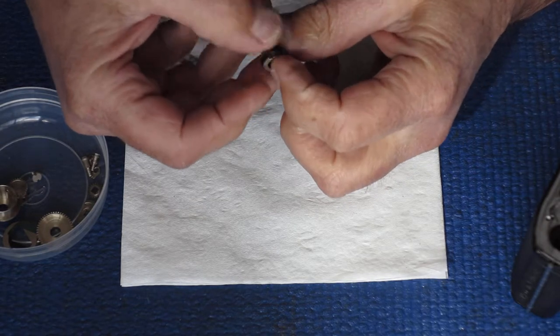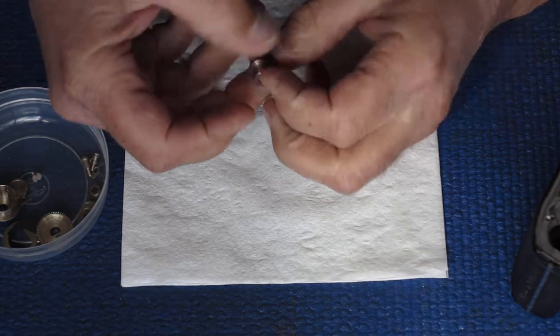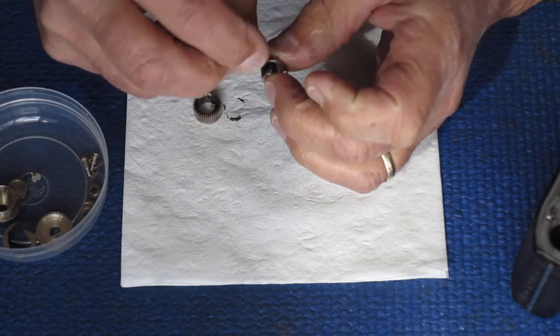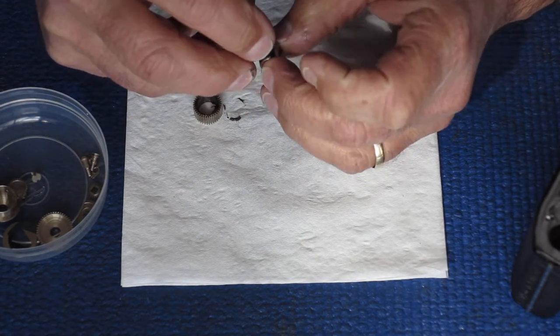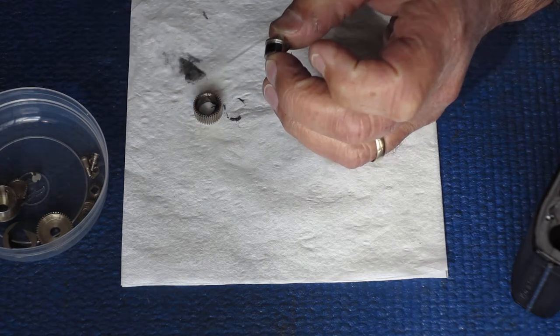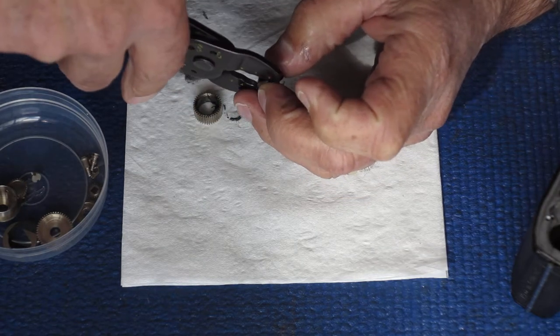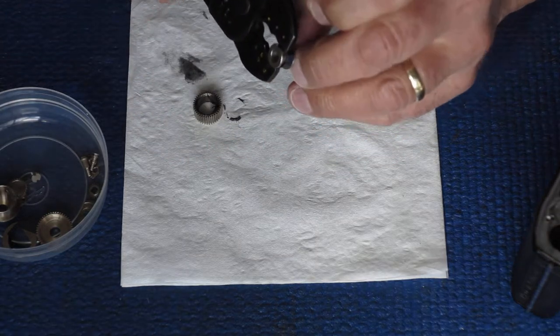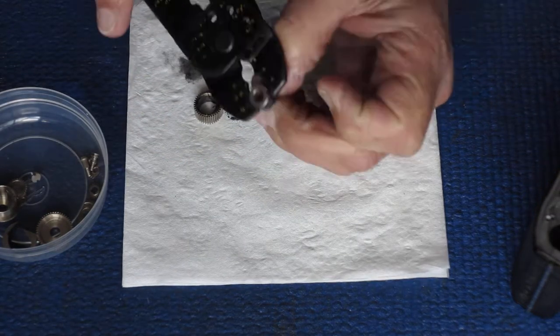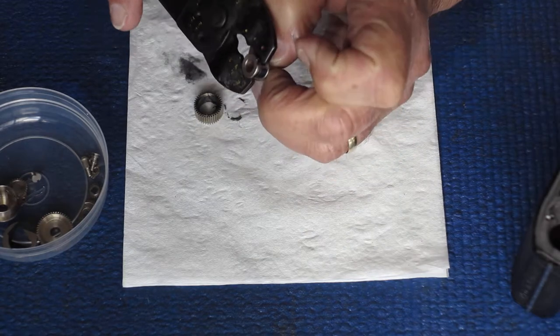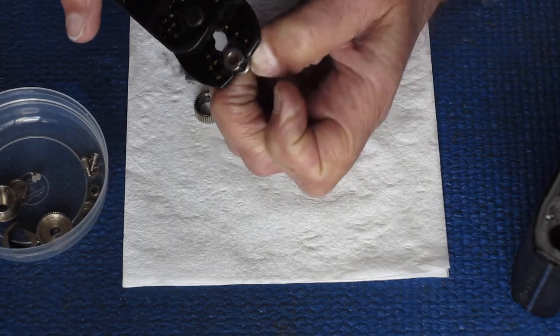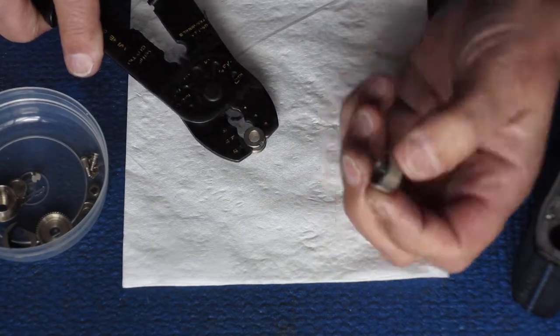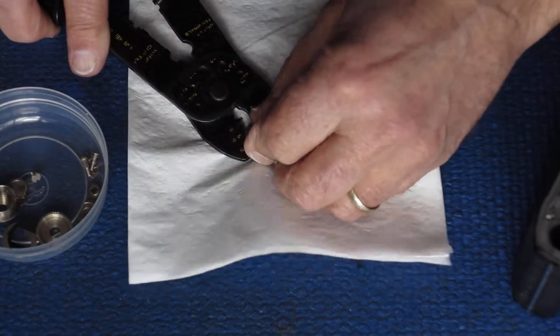So the spring fits onto the centre and it has to hook into that slot there. Now, this is the tricky bit. We've got to keep it hooked up. See how it's sprung out like that. That's because it's a much bigger diameter when it's released. I'm rotating that in the pliers to keep it bound in.